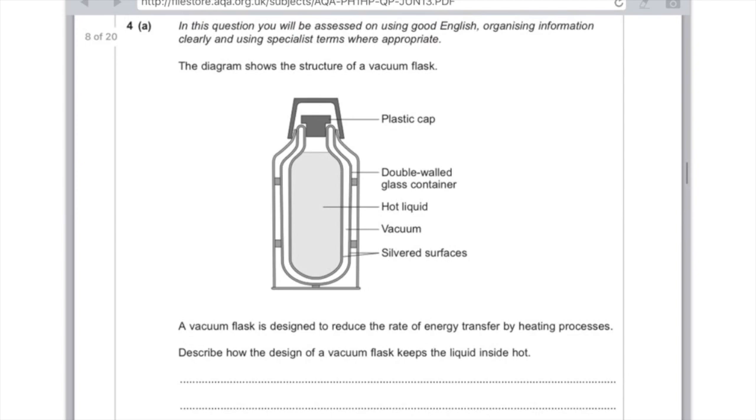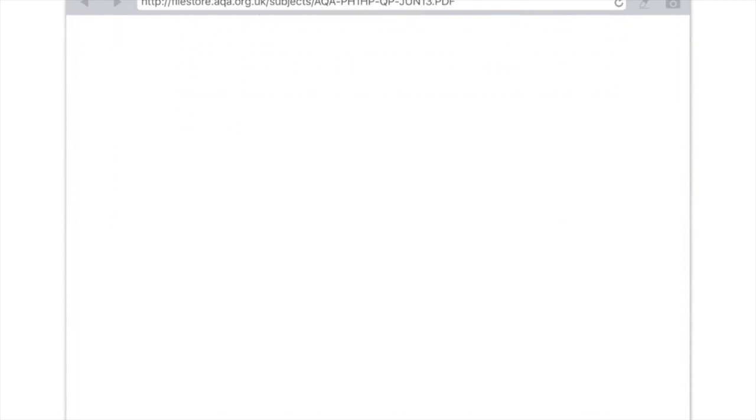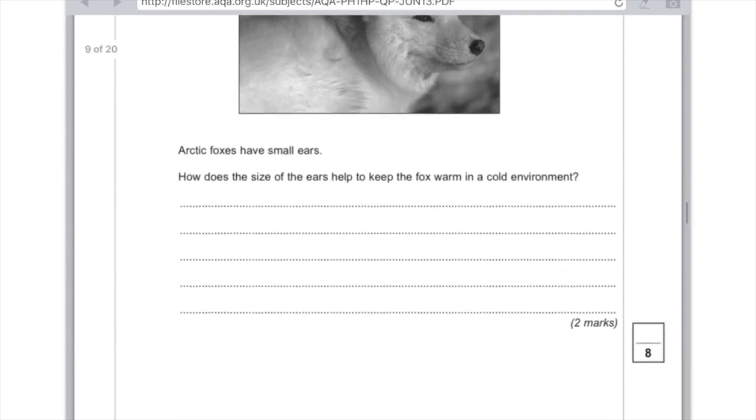Plastic is used as the cap because plastic is a poor conductor and prevents a convection current being set up at the top of the flask. There's a double-walled glass container because glass is a poor conductor, as it has no free electrons. The vacuum's there because it has no particles, so no heat loss by conduction or convection can happen. And lastly, the silver surfaces mean that infrared radiation is reflected back at the hot liquid.